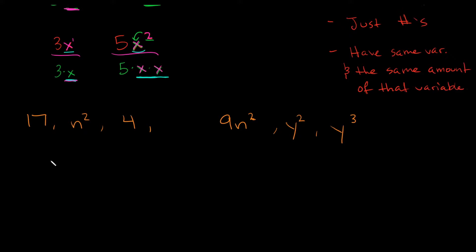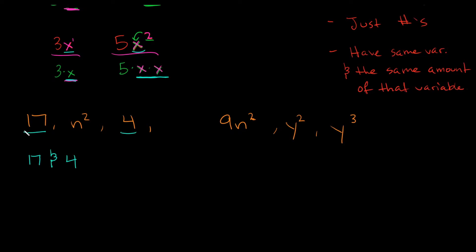Let's try to match these up with their like term. First we have 17 — it's just a number, so we have to match it up with something else that's just a number, which would be 4. So 17 and 4 are like terms.